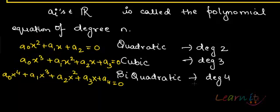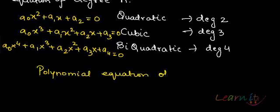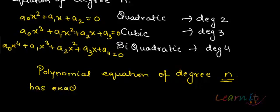A polynomial equation of degree n has exactly n roots. If you have n as the degree of a polynomial equation, then a polynomial equation of degree n has exactly n roots.